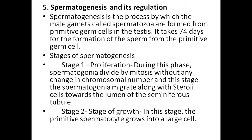Stage 1 — Proliferation: during this phase, spermatogonia divide by mitosis without any change in chromosomal number. At this stage, spermatogonia migrate along the Sertoli cells towards the lumen of the seminiferous tubule.